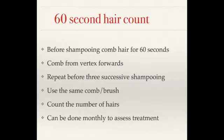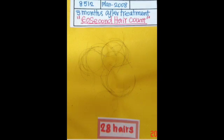Next is the 60-second hair count. This technique consists of 4 steps. Before shampooing, comb the hair for 60 seconds over a pillow or a sheet of contrasting colour to your hair, moving from the back or top towards the front of the scalp. Repeat the procedure before 3 consecutive shampooings, always using the same comb or brush. Count the hairs in the comb, brush, and on the pillow after each count and record. Repeat the procedure monthly and bring the results to your dermatologist. Here's an example from my colleague Dr. Murugasundaram's patient.